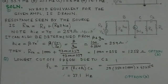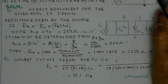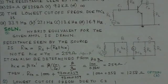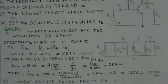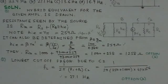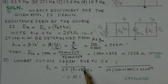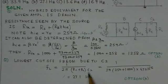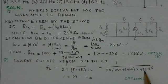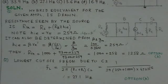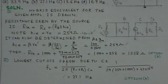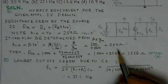For the second part, we find the lowest cutoff frequency due to the coupling capacitor C2. The value of C2 is known, and the cutoff frequency is given by 1 / (2π * (Rc + Rl) * C2). Rc and Rl = 1 kΩ are known. Substituting the values and calculating, we get 27.1 Hz as the lower cutoff frequency. Therefore, option B is the correct choice for this cutoff frequency.